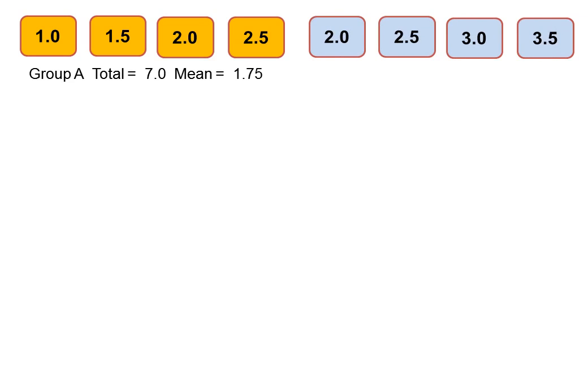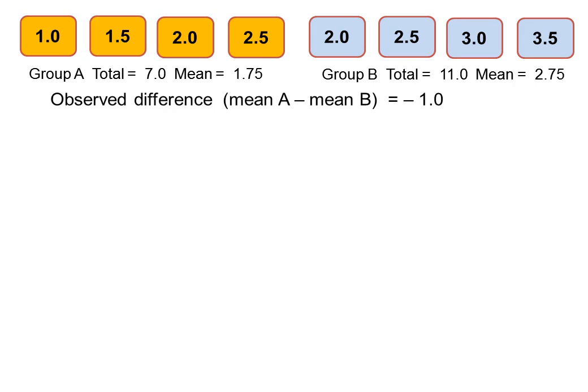There's four observations which we can call Group A. It might be a group of patients who receive Treatment A. The total of those four observations is seven, the mean is 1.75. There's four more observations who've been given Treatment B. The total of those four observations is 11, and the mean is 2.75. So the difference between the means for A and B is minus one. That's what we observed in an experiment, let us suppose. How can we do very simply a test to see whether the effect is likely to be a real one, or whether that difference was just a result of chance?